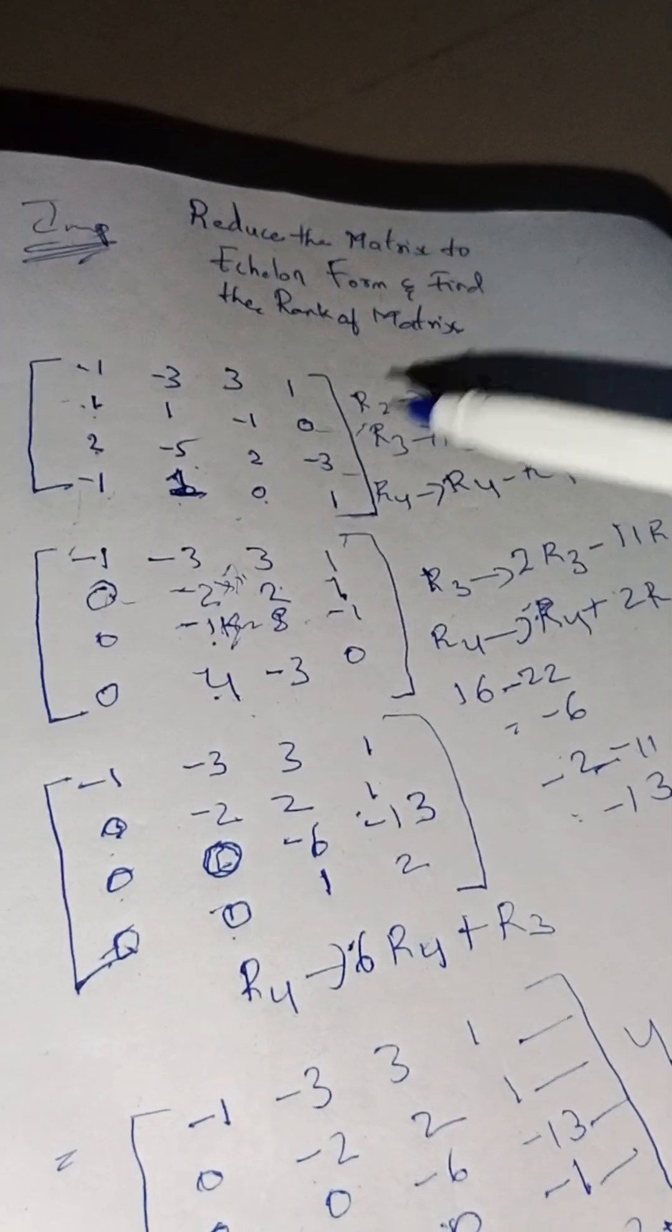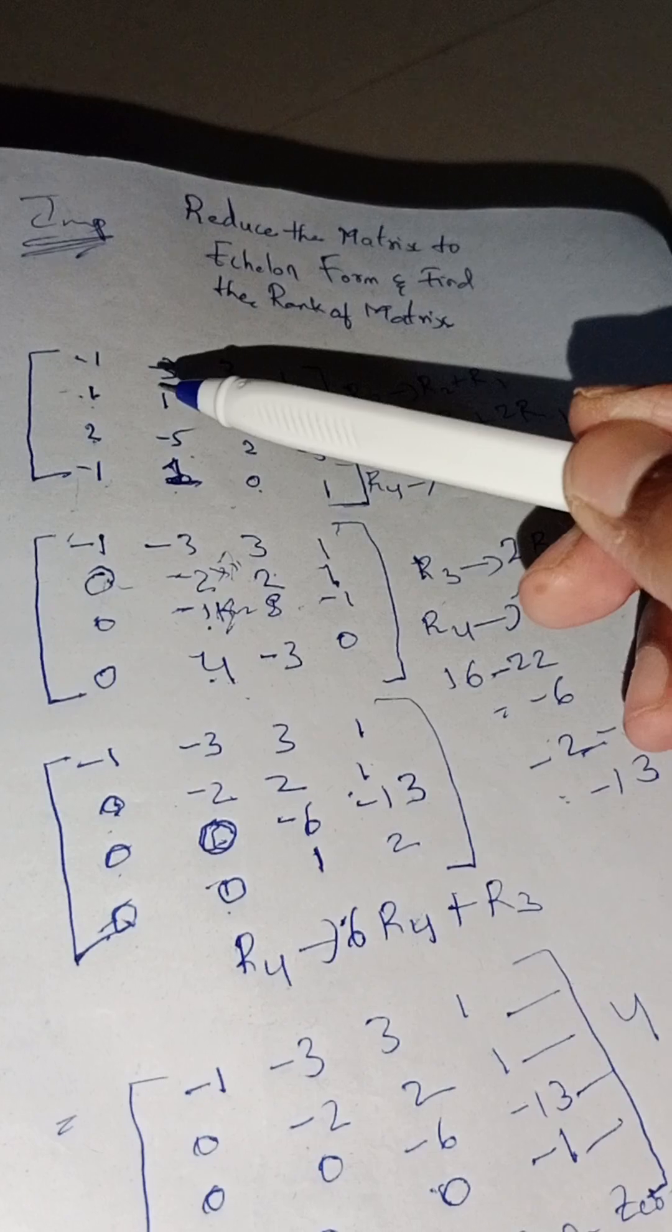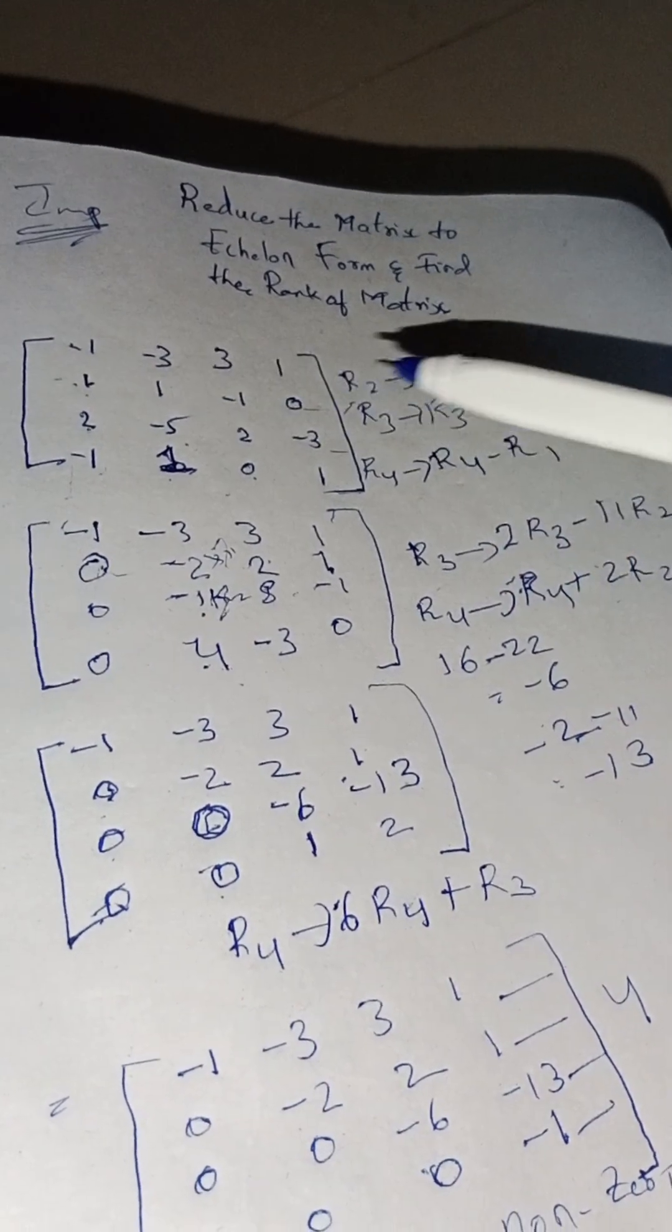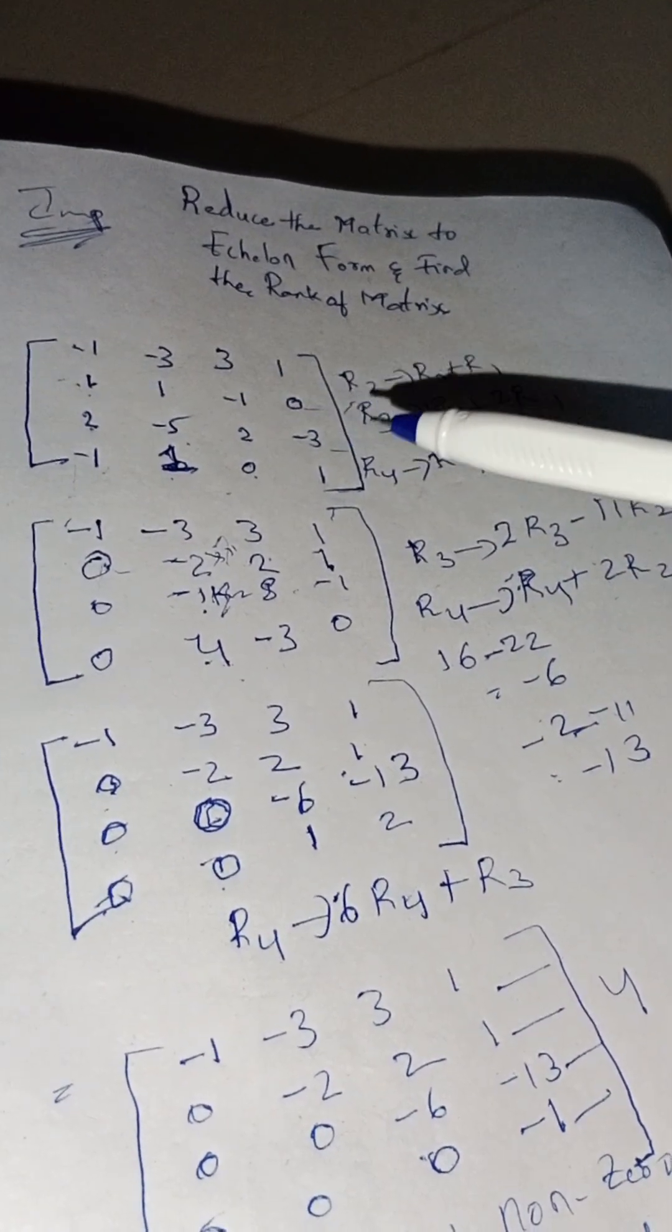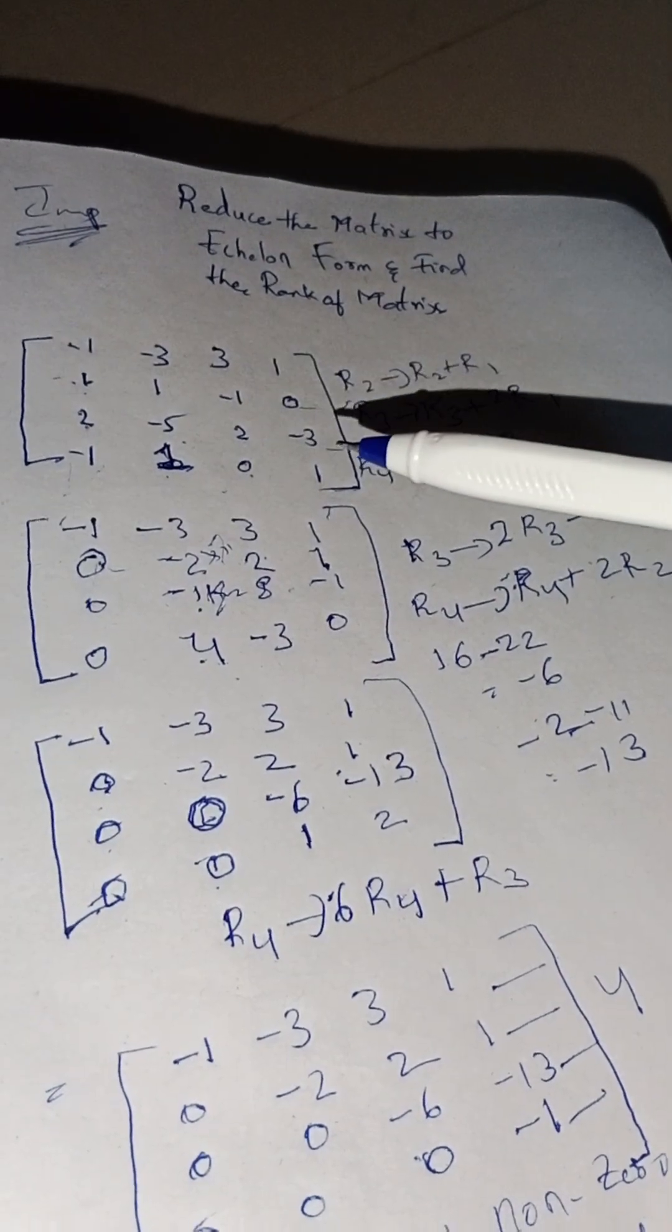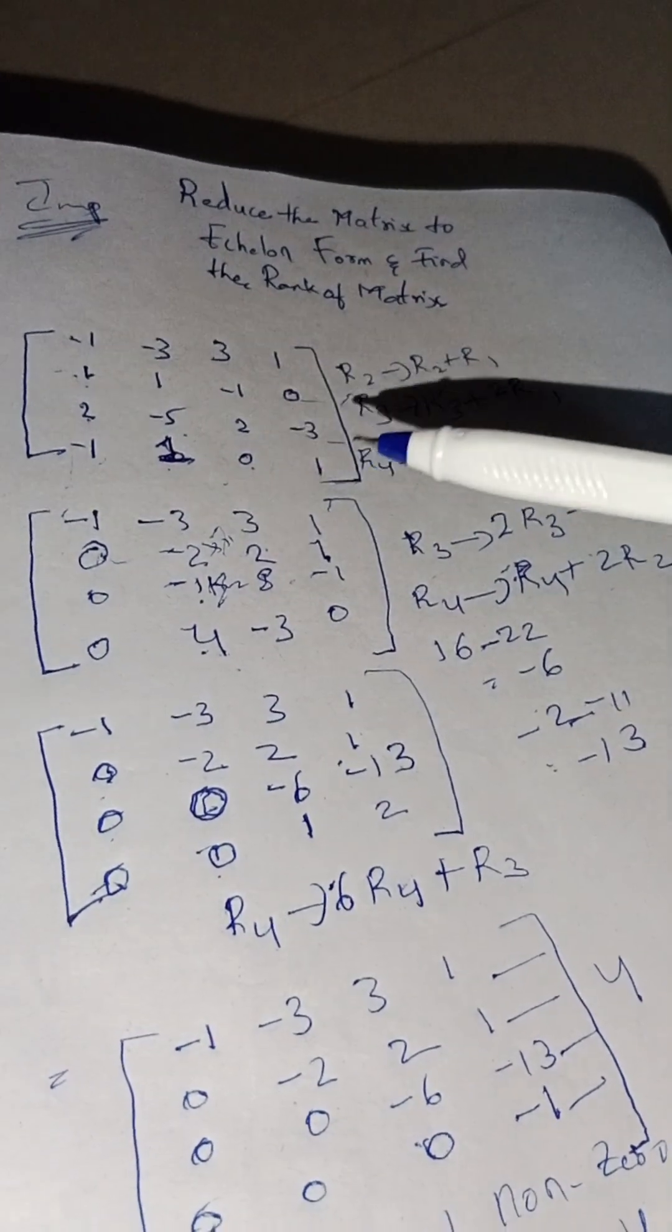The matrix values I have taken are: minus 1, minus 3, 3, 1; 1, 1, minus 1, 0; 2, minus 5, 2, minus 3; minus 1, 1, 0, 1.